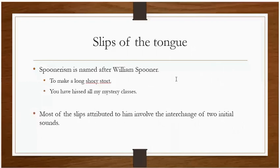A problem we can have is a slip of the tongue, also called spoonerism. The previous one was called malapropism, and this one is spoonerism. It is named after William Spooner. If you look at these two examples, the concept will become clear.